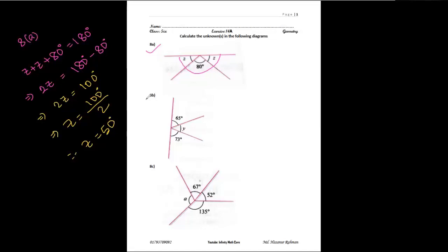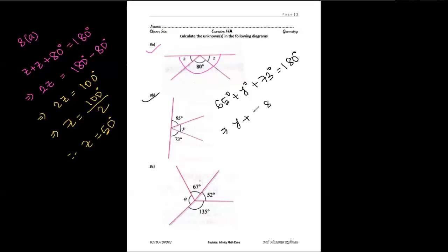Now let's solve 8b. In 8b, similarly we can see three angles: 65, y, and 73. These three angles will make a straight angle, that means 180 degrees. So we can write: 65 degrees plus y degrees plus 73 degrees equals 180 degrees. Adding 65 and 73 gives us 138 degrees, so y plus 138 degrees equals 180 degrees.